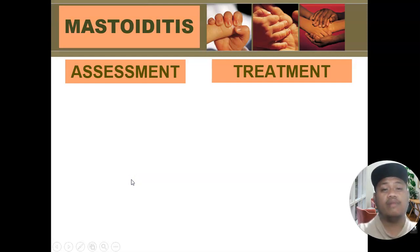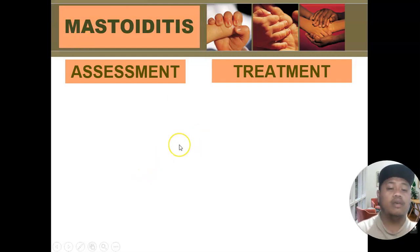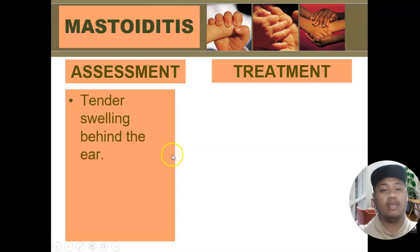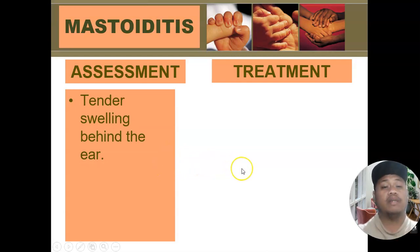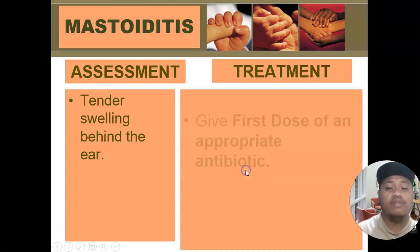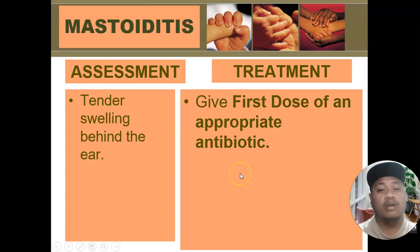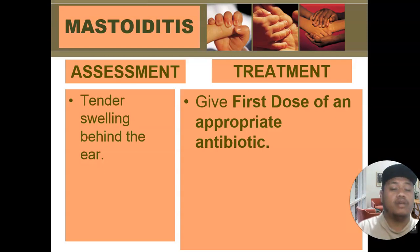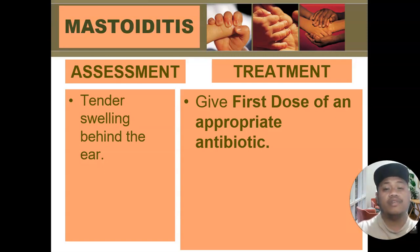Mastoiditis is an inflammation of the mastoid gland, located just behind the ear. An inflammation of this structure results in tender swelling behind the ear — which is the only sign you need to confirm mastoiditis. Once mastoiditis is present, you classify the condition under the pink classification, which requires urgent referral after giving the first dose of appropriate antibiotic. Please access the link in the description box for appropriate antibiotic use in children who need urgent referral.